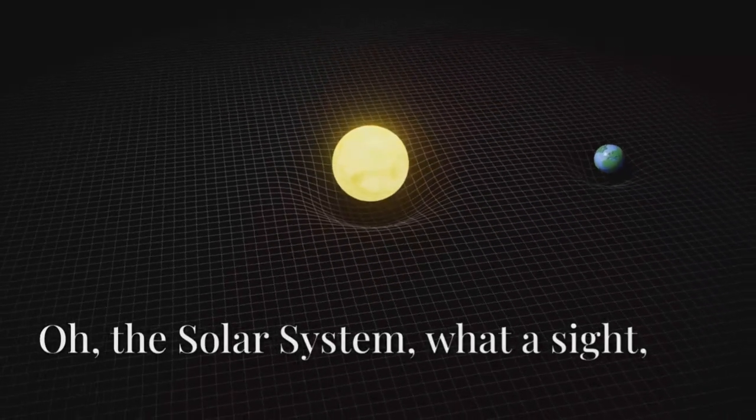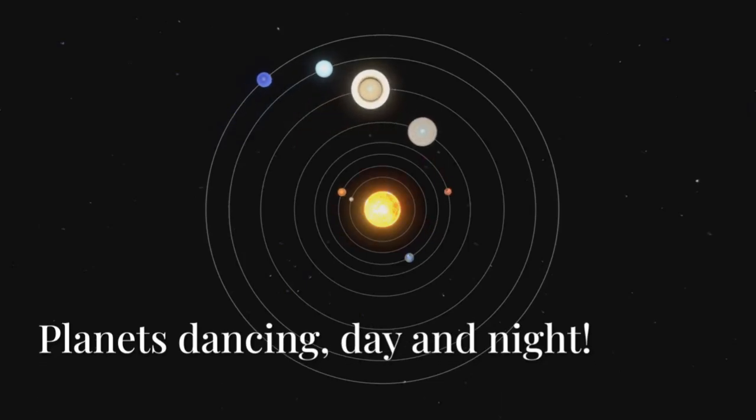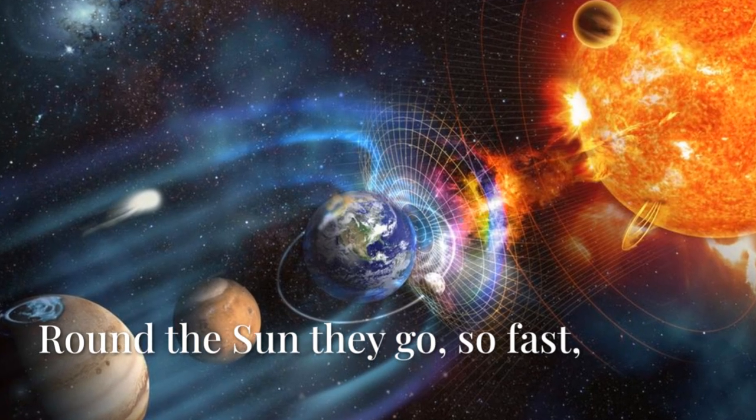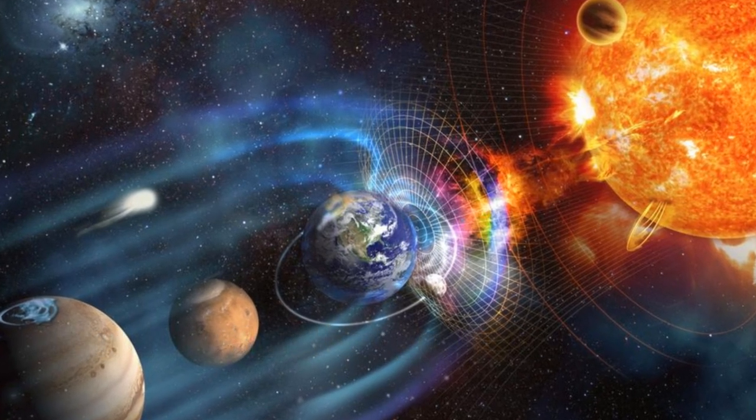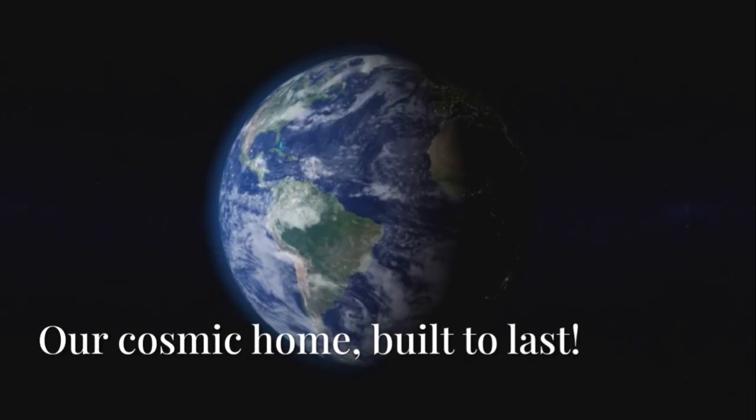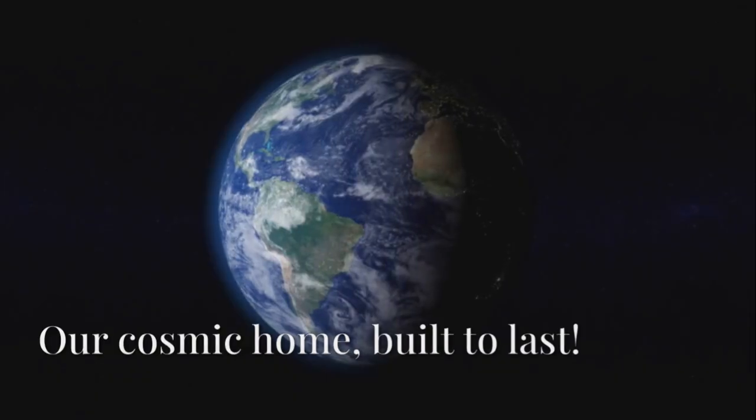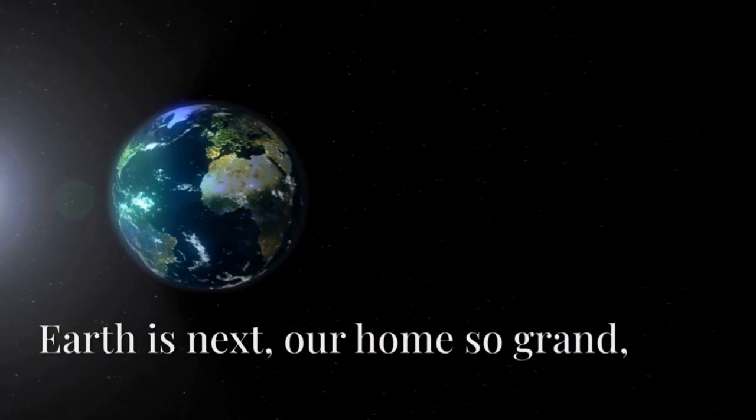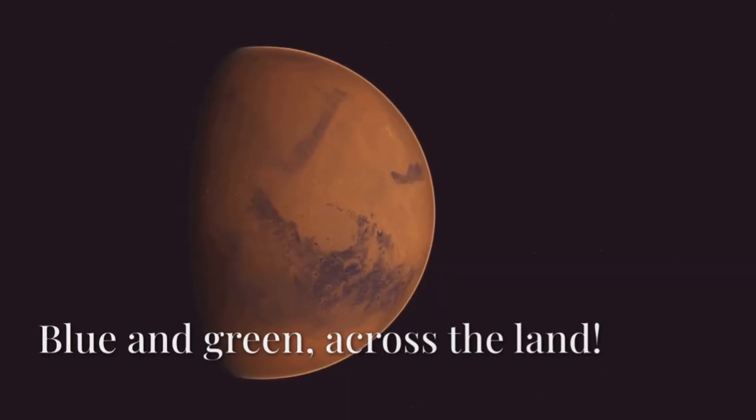Oh, the solar system, what a sight! Planets dancing day and night. Round the sun they go so fast, our cosmic home, built to last. Earth is next, our home so grand, blue and green across the land. Mars is red with dusty plains, scientists look for ancient rains.